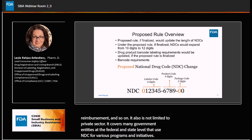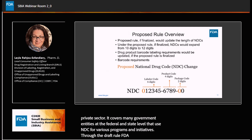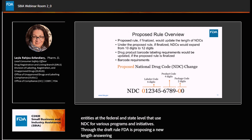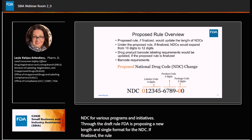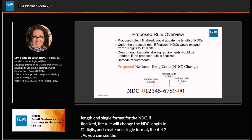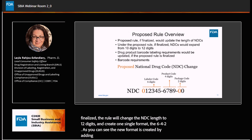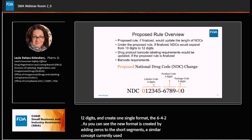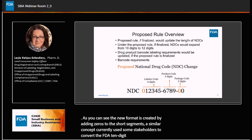FDA is proposing a new length and single format for the NDC. If finalized, the rule will change the NDC length to 12 digits and create one single format, the 6-4-2. As you can see here, the new format is created by adding leading zeros to the short segments — a similar concept currently used by some stakeholders to convert the FDA 10-digit NDC to the HIPAA 11-digit NDC.